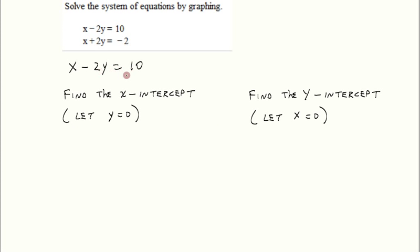x minus 2y equals 10. We want to find the x-intercept. Now remember, that's just where the graph crosses the x-axis. So somewhere this graph is going to cross the x-axis. We don't know where it is yet. But wherever it intersects the x-axis, one thing we know for sure is the y value is 0 there. So that's why we can find it by letting y equal 0.